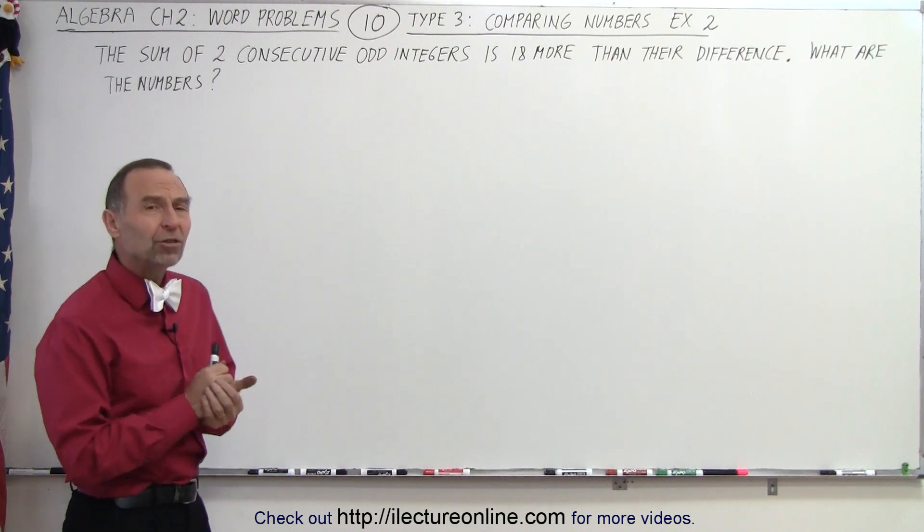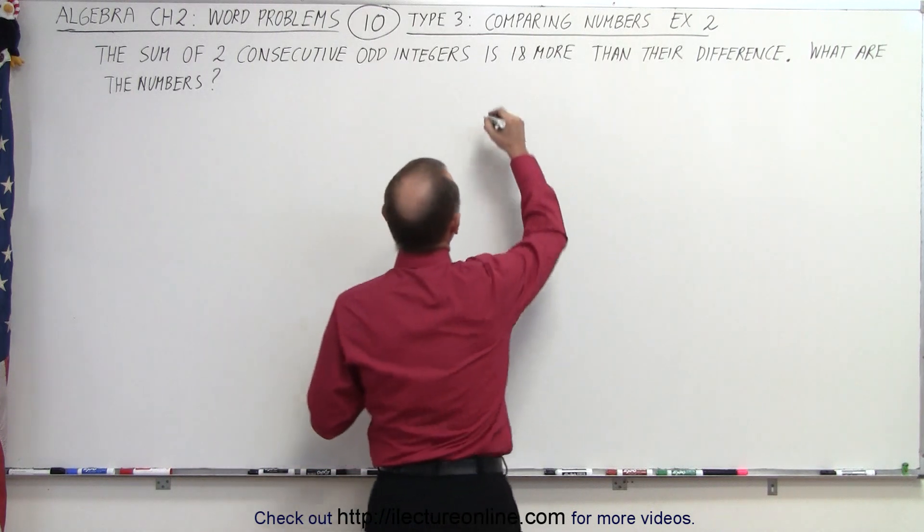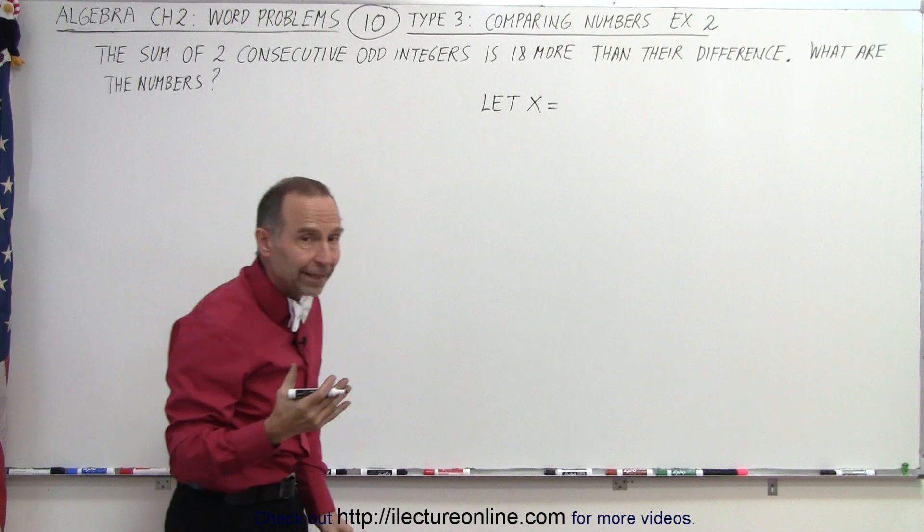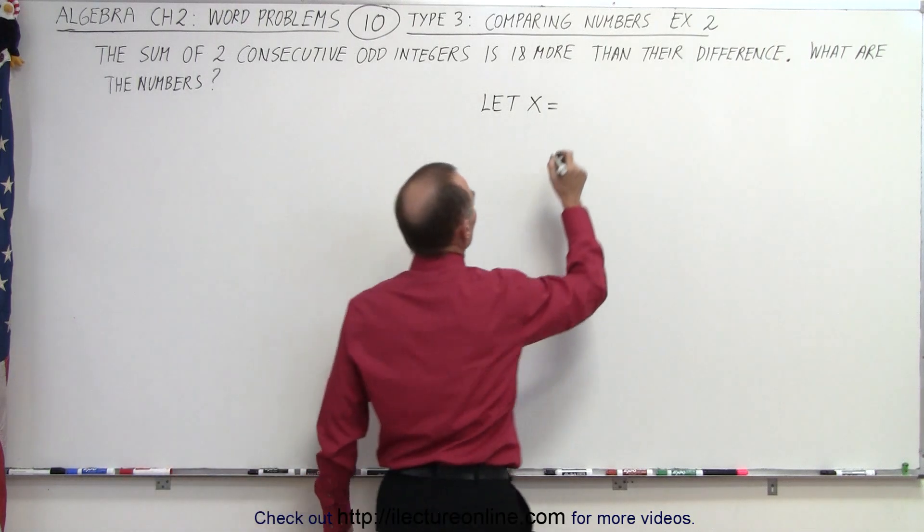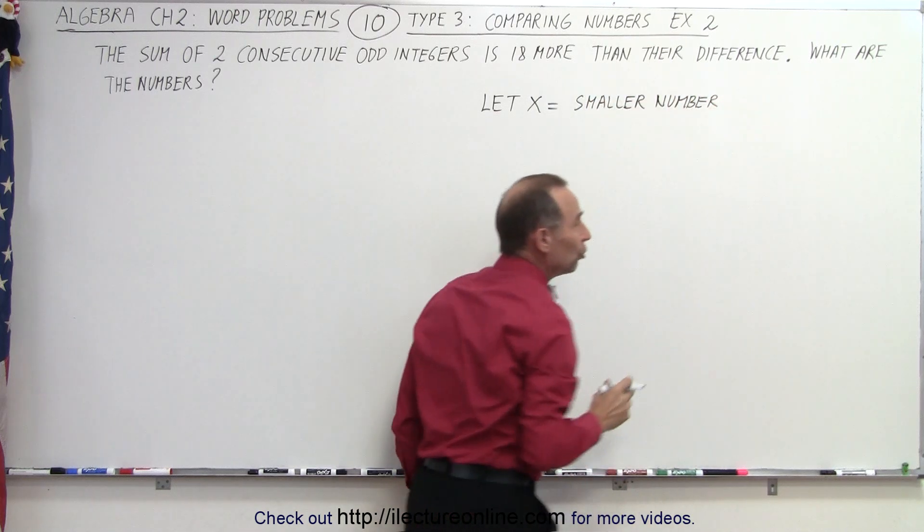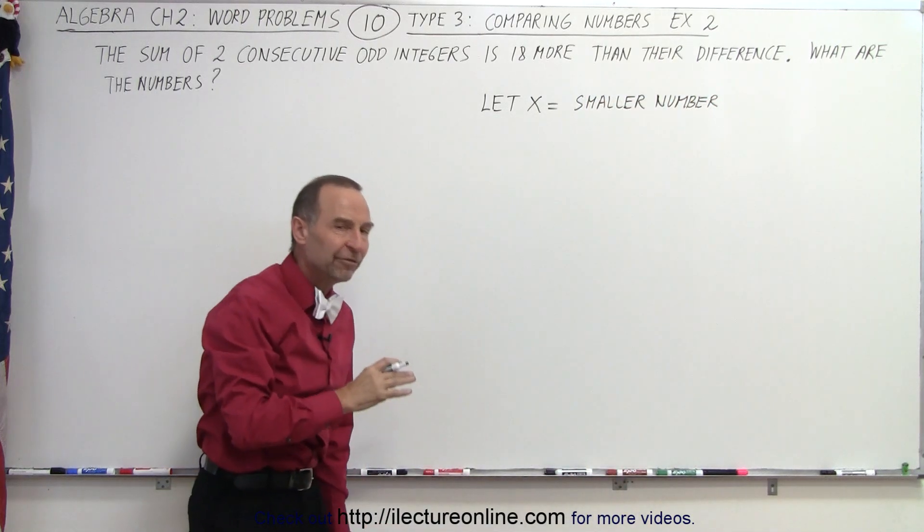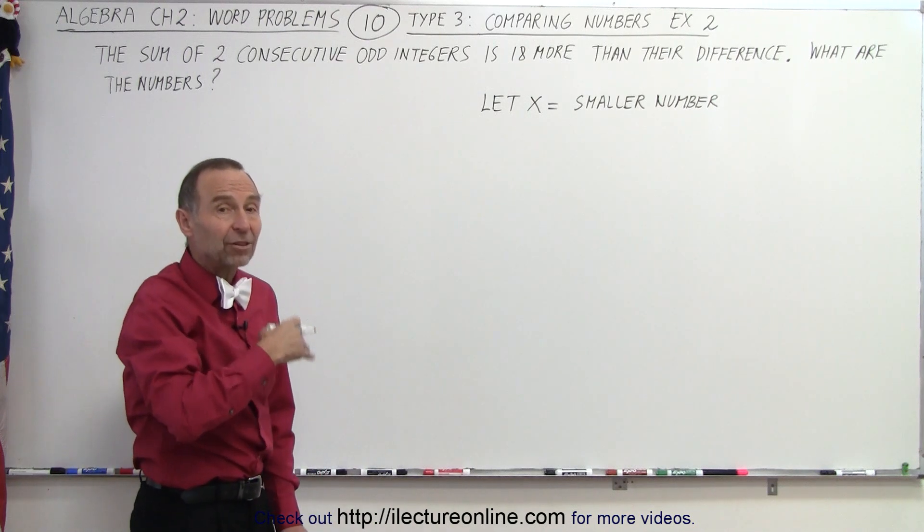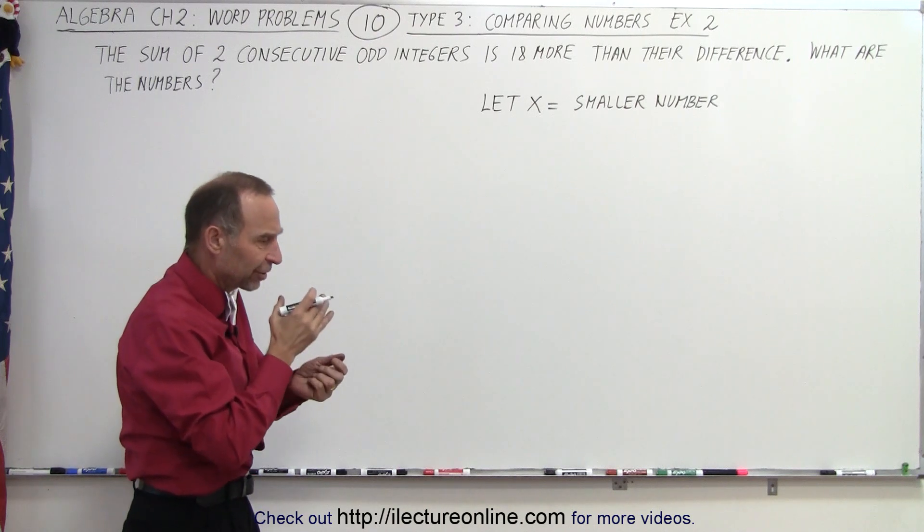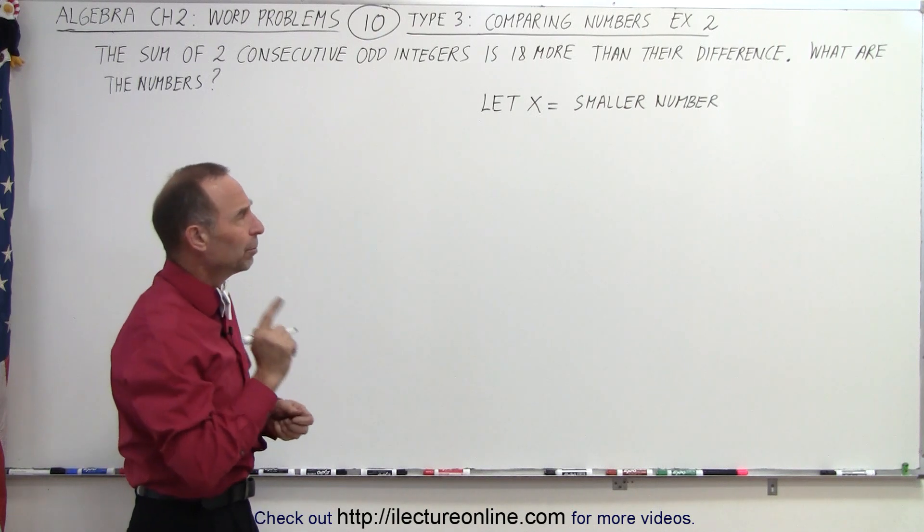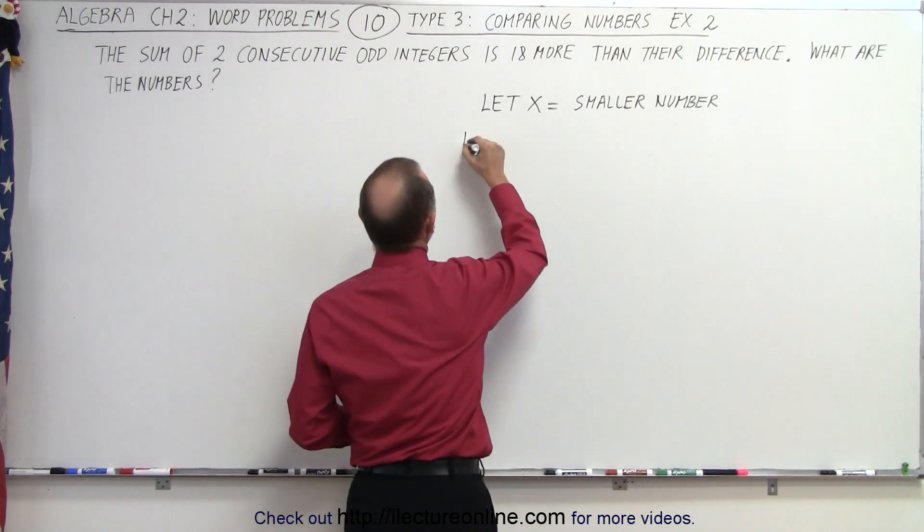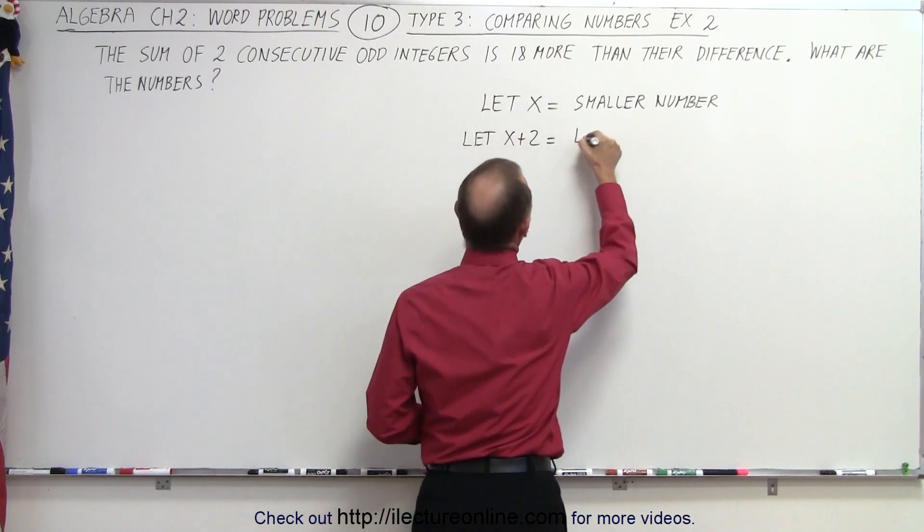Well, the best way to start again is by saying let x equal something. Let x equal, in this case, it would be a good idea to let it equal the smallest of the two numbers. So let x equal the smaller number. And since the two numbers are consecutive odd integers, the next one would be x plus 2. Whatever the smaller one is, the larger one would be two more. Now if they're consecutive integers, then the larger one just would be one more. But since they're consecutive odd integers, we have to go by 2. So we let x plus 2 equal the larger number.